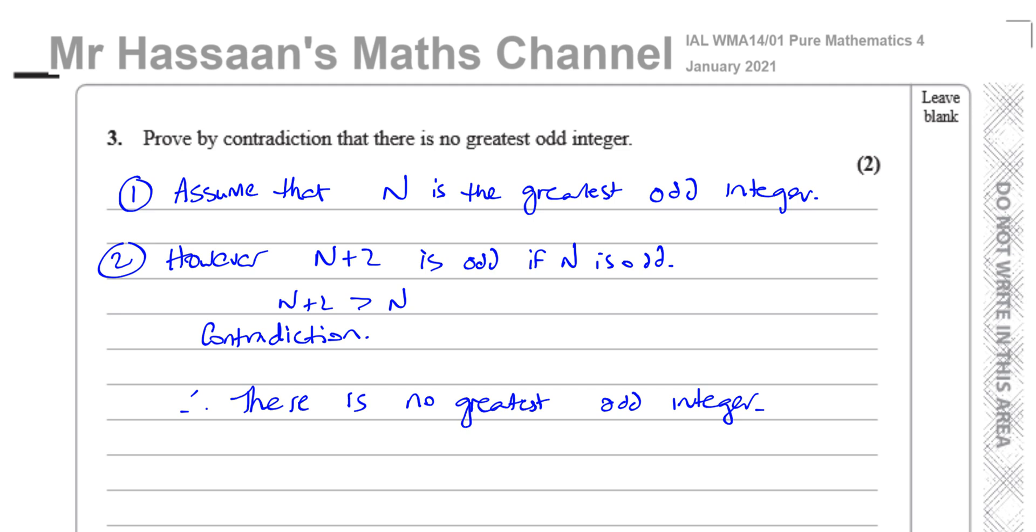So there we have it, answer for question number 3. Other questions from this paper of January 2021, paper 4, will be found in the playlist that should appear up here. Other questions from this topic of proof by contradiction will be found in this playlist. You can subscribe to my channel by clicking on this link. Top of the page here, you'll find another link to another past paper you might want to watch. Thank you for watching.